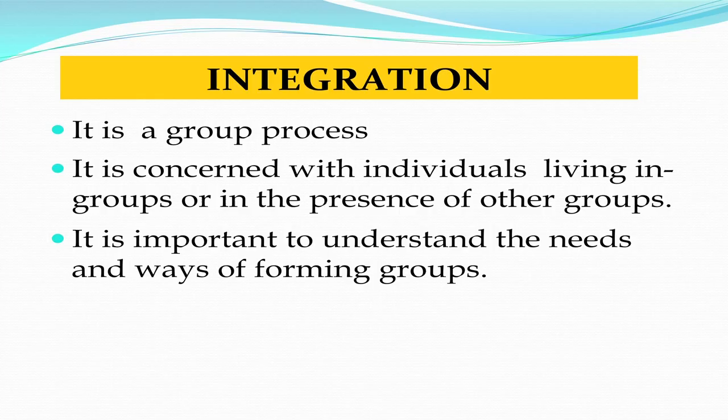Assimilation is when you lose your previous identity and form a new identity — one very good example is American society. The third very important social process we are going to discuss is integration. Integration is a process when groups come together as a single unit — they tend to remain together and work together. Integration is very essential for cultural growth. Society always grows from simple to complex, from homogeneous to heterogeneous, and therefore it is very important that there should be integration.